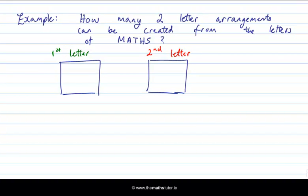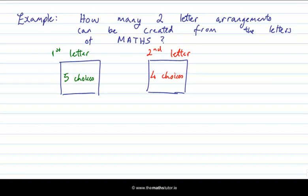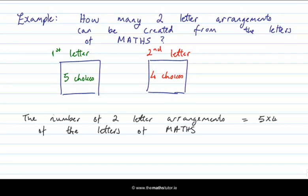How many choices can we make for the first letter? There are no restrictions, so we have five letters to choose from — five choices. But now we've used up a letter, and remember for basic arrangements we cannot repeat a letter. So there are only four choices left for the second box. The fundamental principle of counting tells us that the total number of possibilities is five times four, which is 20. So the number of two-letter arrangements from the letters of the word MATHS is 20.